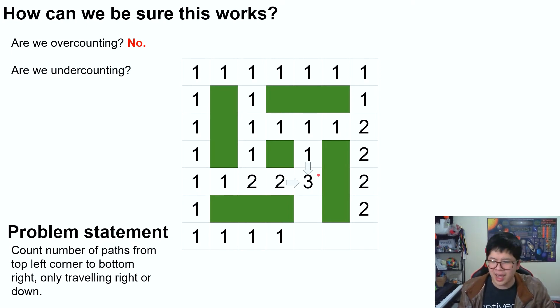And are we under counting, i.e. are there paths that go to this cell that we're somehow not including by doing the summation? And the answer is also no, because there's literally no other way to get to this cell other than through the left or through the top. So that means that this method of counting must be correct.